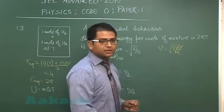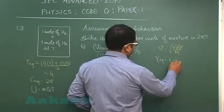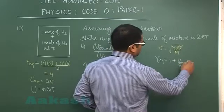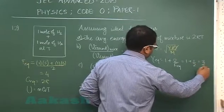Gamma equivalent would be 1 plus 2 by f equivalent, which is 4, so that would be 1 plus 1/2, that comes out to be 3/2.